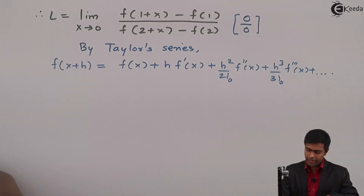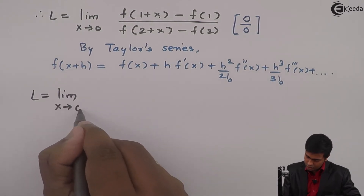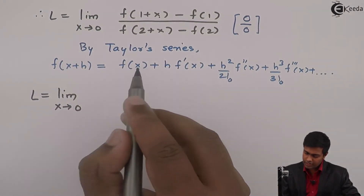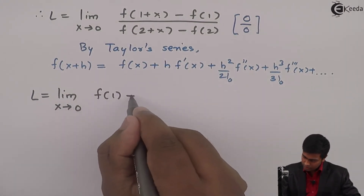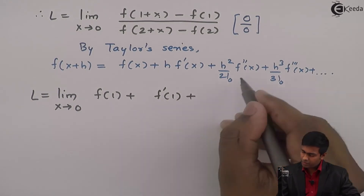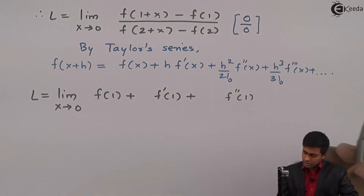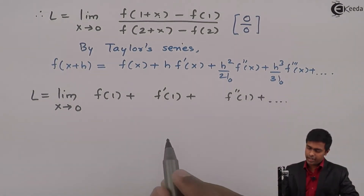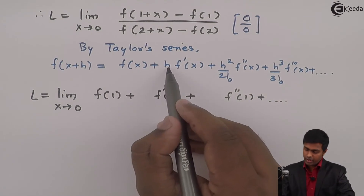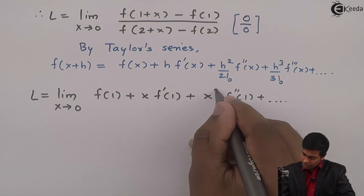Using this formula where 1 acts as x and x acts as h, we get L = limit x→0. For f(1+x) in the numerator: f(1) + x·f'(1) + (x²/2!)·f''(1) + ... And similarly for the denominator, f(2+x) will expand as f(2) + x·f'(2) + (x²/2!)·f''(2) + ...